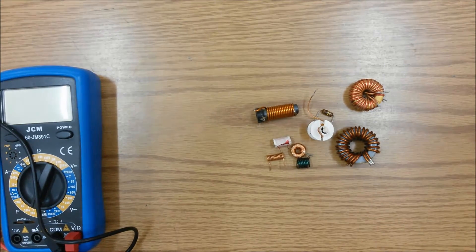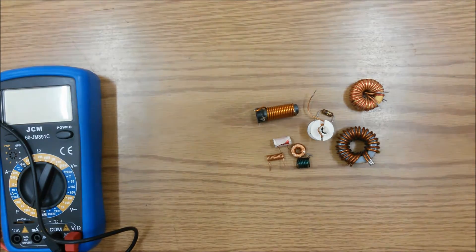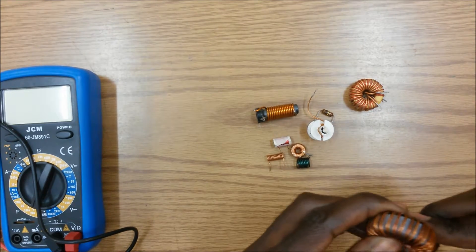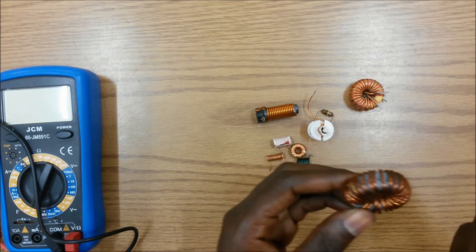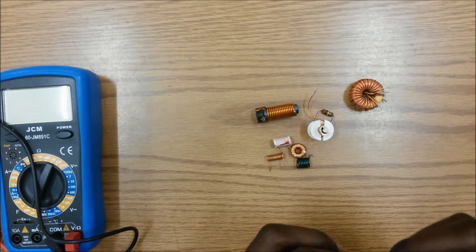When an inductor is actually placed in a circuit and current is allowed to flow through it, that current flowing through it actually sets up a magnetic field around the inductor. So when there's current flowing, there's a magnetic field.